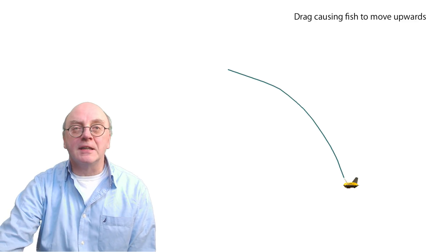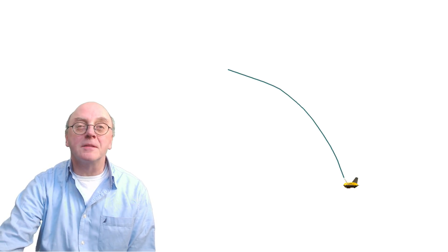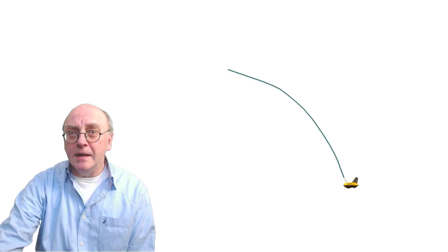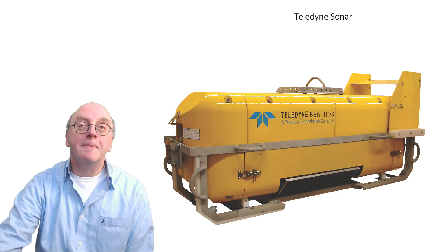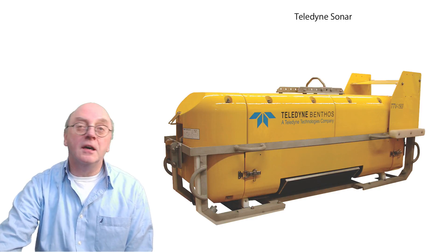There are two main strategies to try and keep the fish as near to the seabed as possible. One is to design the tow fish to be especially heavy, maybe adding a clump weight to increase its mass and deter the body from rising.